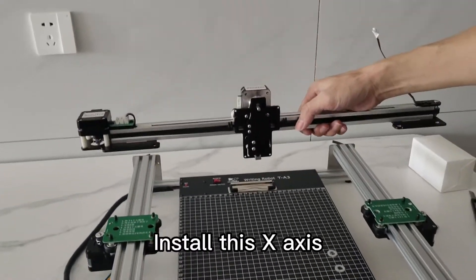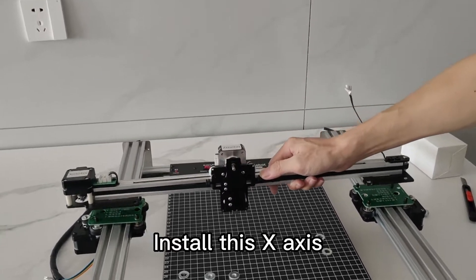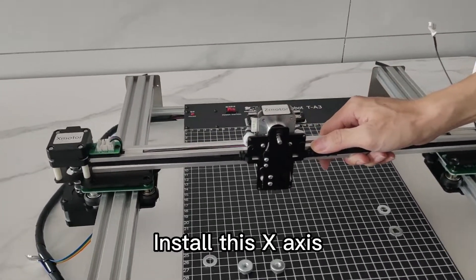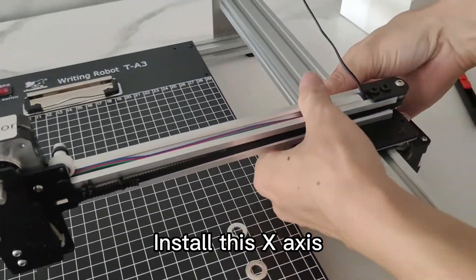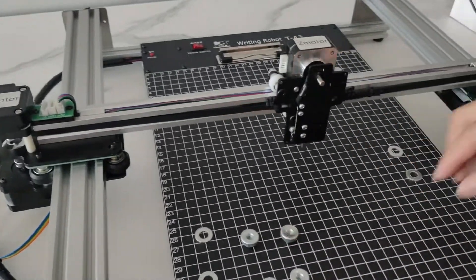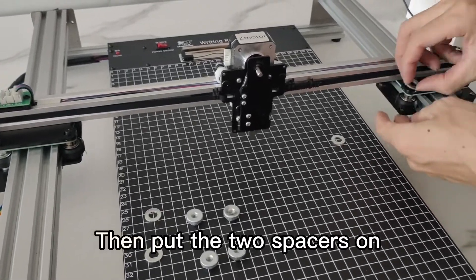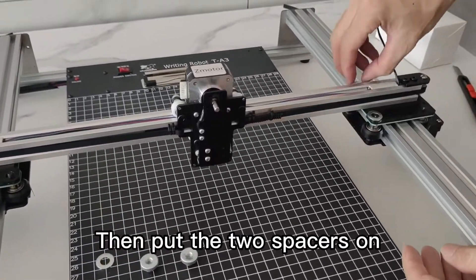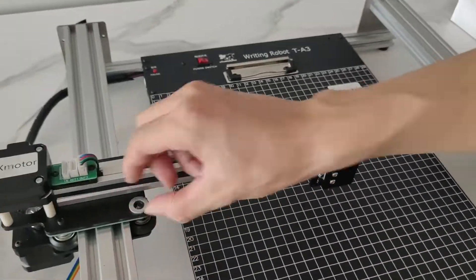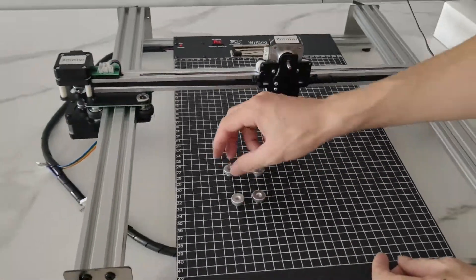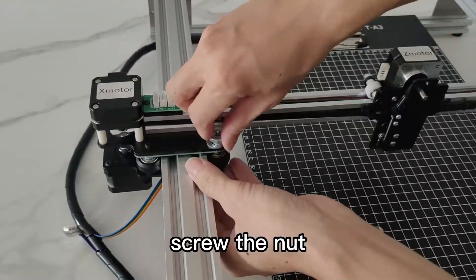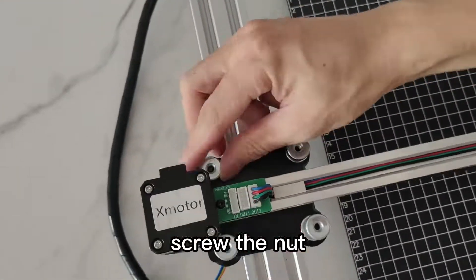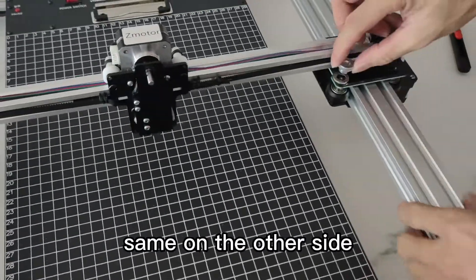Install this x-axis. Then put the two spacers on. Screw the nut. Same on the other side.